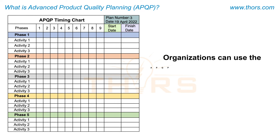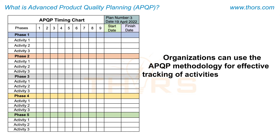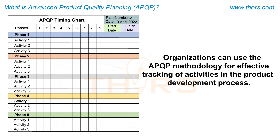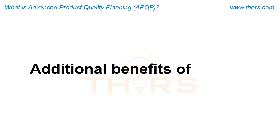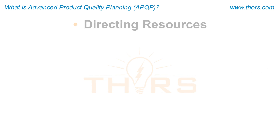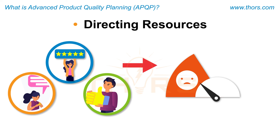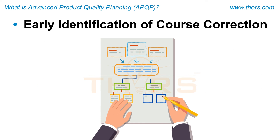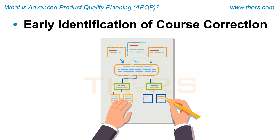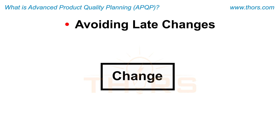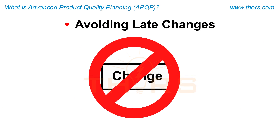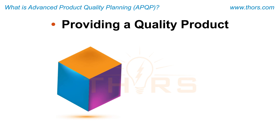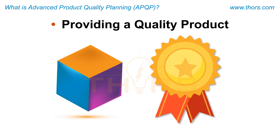Organizations can use the APQP methodology for effective tracking of activities in the product development process. Additional benefits of APQP include directing resources to satisfy the customer, promoting early identification of the required course corrections, avoiding late changes which are invariably expensive, and providing a quality product on time at the lowest cost.